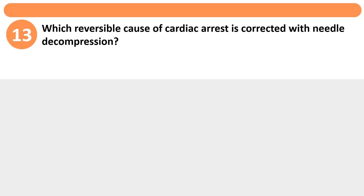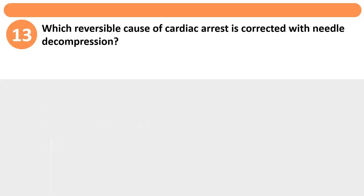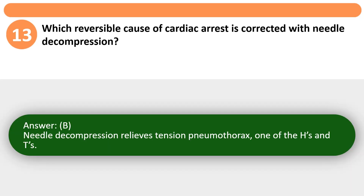Which reversible cause of cardiac arrest is corrected with needle decompression? A. Hypovolemia. B. Tension pneumothorax. C. Hypokalemia. D. Tamponade. Answer: B. Needle decompression relieves tension pneumothorax, one of the H's and T's.